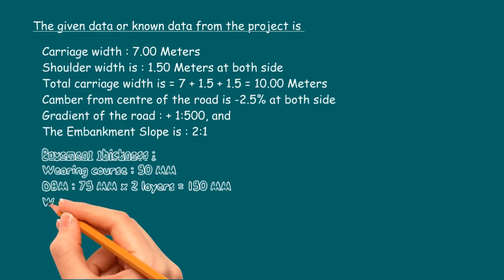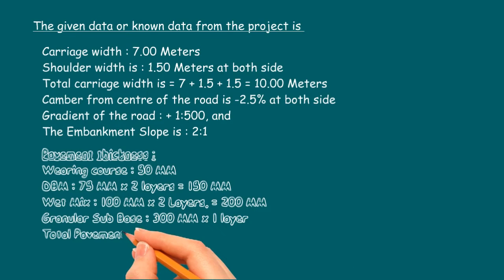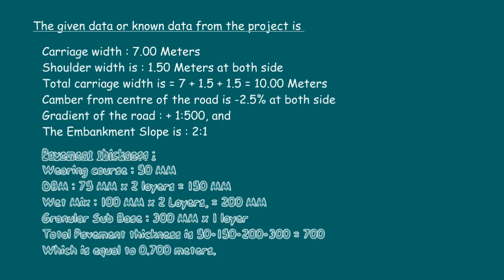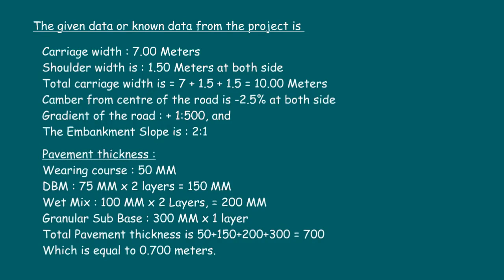The details of pavement are: wearing course 50 mm, DBM 2 layers of 75 mm thick which equals 150 mm, wet mix 2 layers of 100 mm which equals 200 mm, granular sub base 300 mm single layer. The total thickness of pavement is 50 plus 150 plus 200 plus 300, equals 700 mm, which is equal to 0.7 meters.